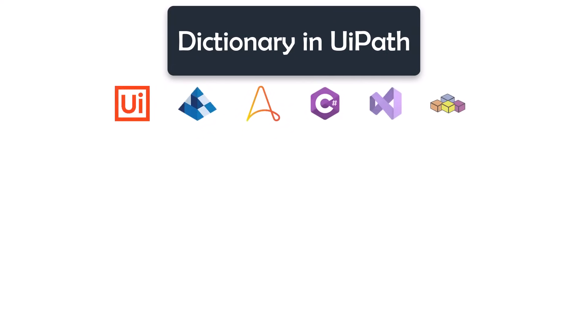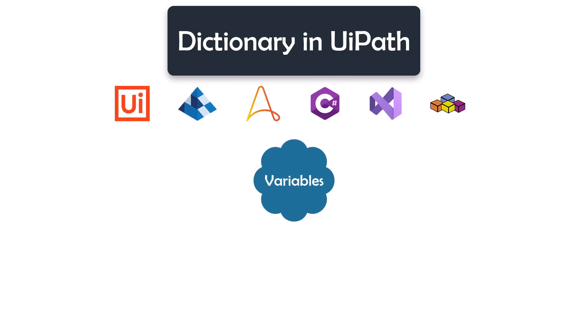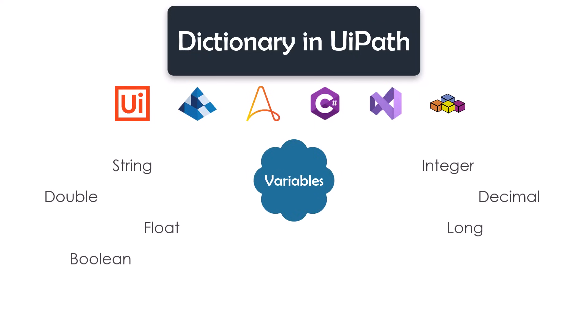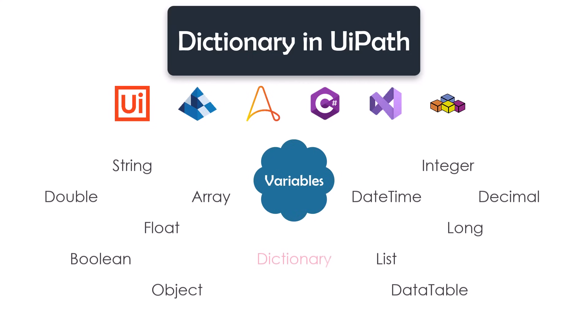In UiPath or in any other tool or programming language, we use variables to store and pass data. The variables have different data types depending on what we want to store in them. For example, if you want to store a text you can use string type. To store a number you can use integer, double, decimal, or many other number types. To store boolean, you can use boolean type. And so on — you can use the data type you need. Dictionary is also a data type that we can use for a variable to store data.